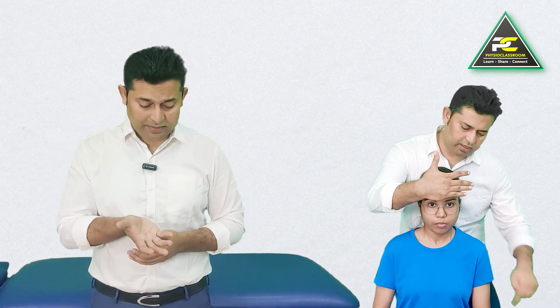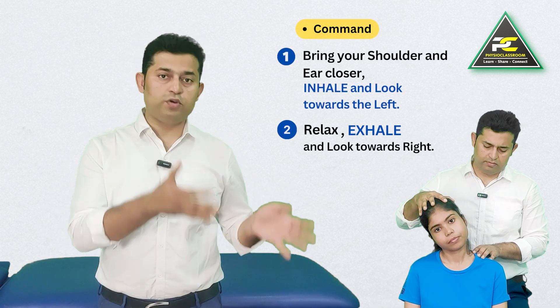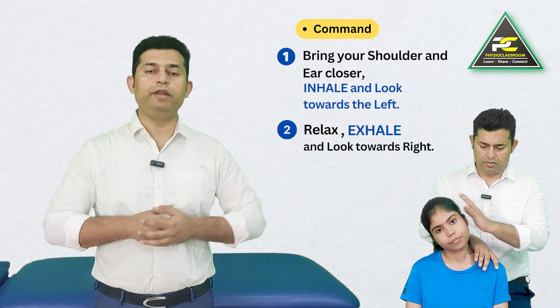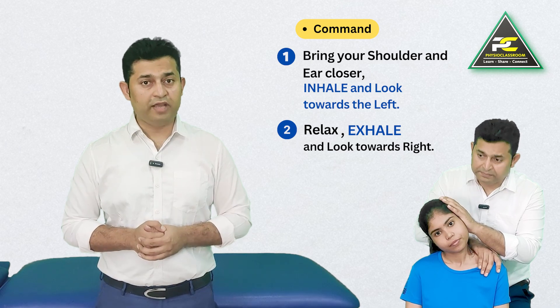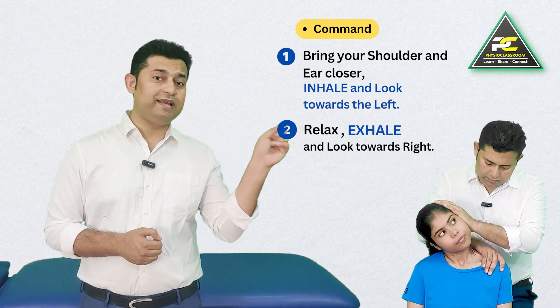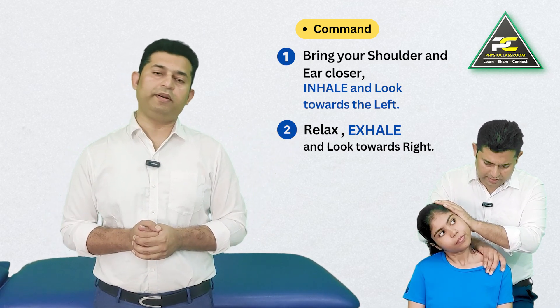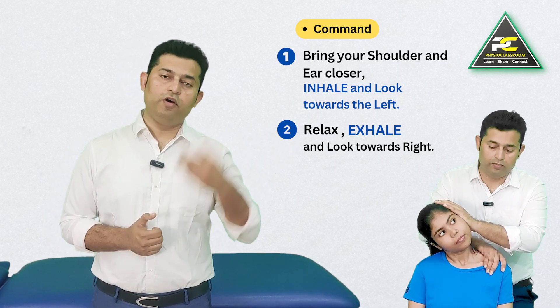Similarly, in the trapezius example demonstrated in this video, the patient can be asked to look toward the left while producing an isometric contraction from the left trapezius, then look toward the right when the therapist takes the head and neck into the newer range of movement.